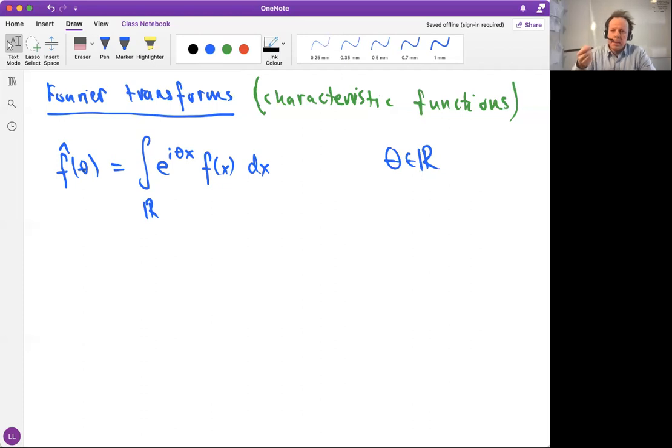What has this to do with probability theory? Well, think about this f being a probability density function. So if we have a random variable X with the probability density f, then this would be actually integrating with the law of this random variable X.